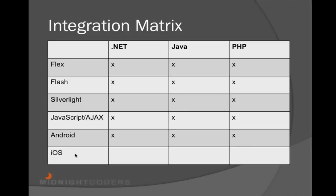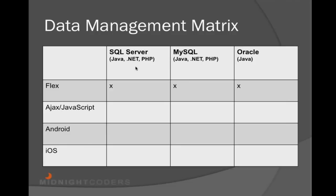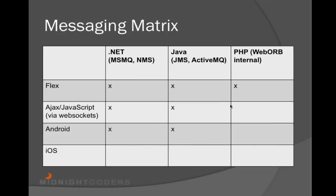From the remoting perspective, if you have any EJB or POJO on the Java side, or a Spring.NET object or .NET object on the .NET side, then these clients can get access to these resources through Web Warp. As far as the data management matrix, our data framework currently is oriented towards Flex clients, and we're working on addressing the need for Ajax, Android, and iOS clients. These nine cells are going to be filled in later this year. For the messaging matrix, if you have an MSMQ or NMS backend, today you can connect from Flex, Ajax, and Android. iOS is once again missing.